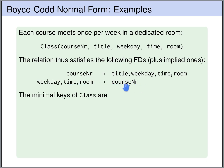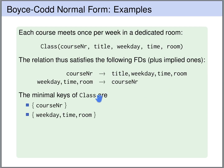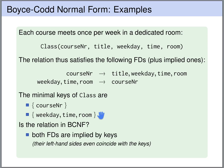So we have two minimal keys: course number, and the combination of weekday, time, and room. It's clear that both functional dependencies are implied by keys — the first contains course number on the left-hand side, and the second contains weekday, time, and room on the left-hand side. So both functional dependencies are implied by keys, and thus the relation is in Boyce-Codd normal form.